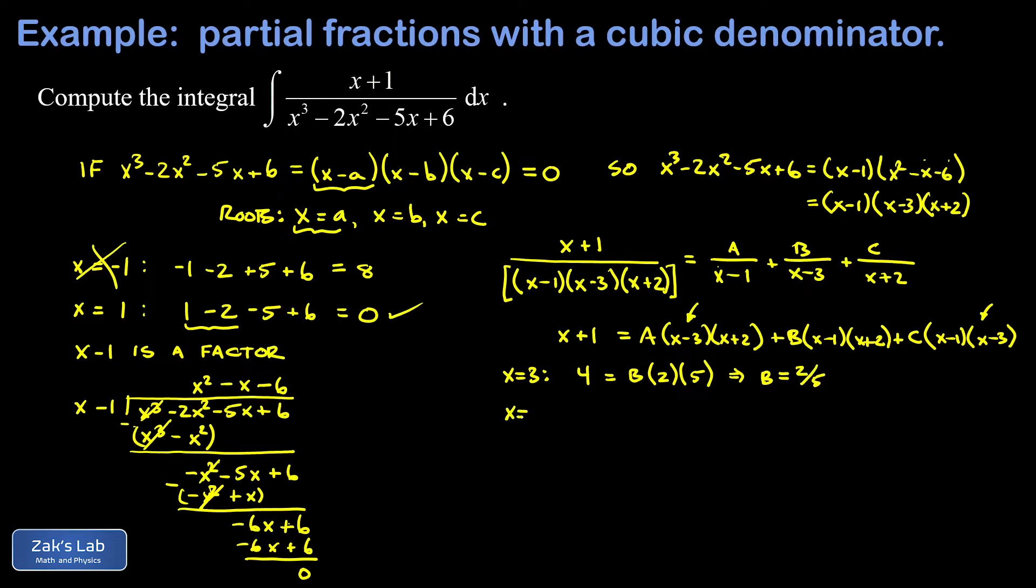Now we sub in x equals negative two. That kills the a and b containing terms because they're multiplied by a factor that's equal to zero. And c is the only survivor. So on the left hand side, we have a negative one. On the right hand side, we have a c times negative two minus one. That's negative three times a negative two minus three. That's negative five. So 15c over there on the right hand side is equal to negative one. That means c is negative one over 15.